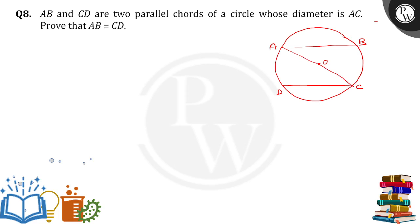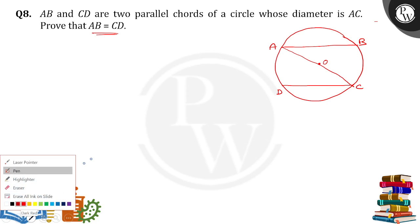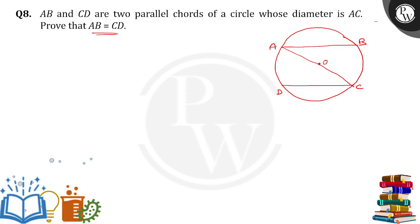Now we have to prove AB is equal to CD. How can we prove that? Let's have a look. So what I am going to do here, I am going to join BC and I am going to join AD.